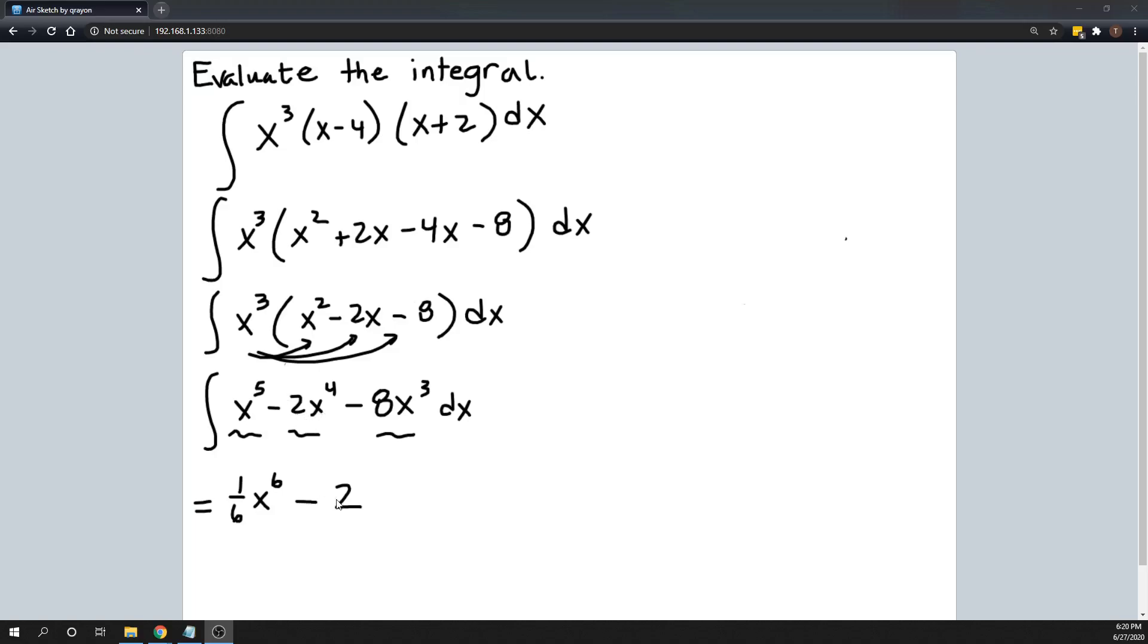The constant multiple rule says if I have a constant times a function and I want to find the indefinite integral, then just rewrite the constant and multiply it by the antiderivative or indefinite integral of the function part. So the function part is x to the fourth. That is a power function. And so I add 1 to the power to get the new power, which is going to be 5, and then divide by 5 or multiply by 1 fifth.